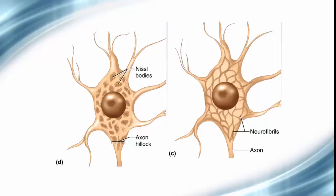The neuron also has a large number of mitochondria, and that's to keep up with its high metabolic demands, and an elaborate rough endoplasmic reticulum to provide the enormous demand of proteins needed. These sketches of the soma of neurons show the neurofibrils of the cytoskeleton and the Nissl bodies of the rough endoplasmic reticulum.